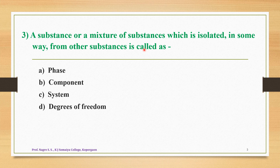Question number three: a substance or a mixture of substances which is isolated in some way from other substances is called as — option A is phase, option B is component, option C is system, and option D is degrees of freedom. The correct answer is option C — it is called the system. A system is a substance or mixture of substances isolated from other substances.